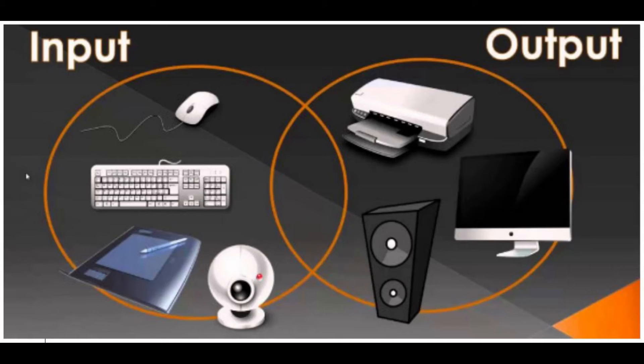Optical Character Reader (OCR) is an input device used to read a printed text. OCR scans the text optically, character by character, converts them into a machine-readable code, and stores the text on the system memory.